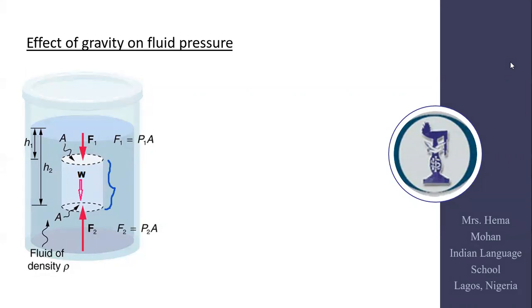Looking at this figure, I consider the top surface where the force acting is F1 equals P1 times A, and at the bottom surface F2 equals P2 times A. Not only these two forces act on the liquid element — there is also the weight of the liquid column acting in the downward direction. There are also horizontal forces acting on the liquid column.